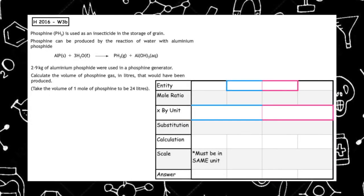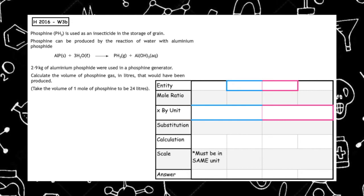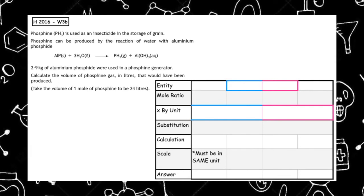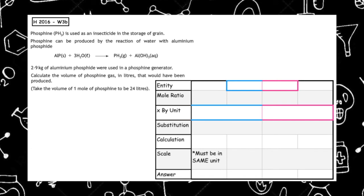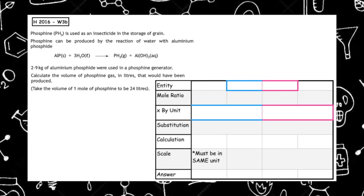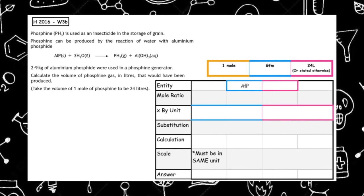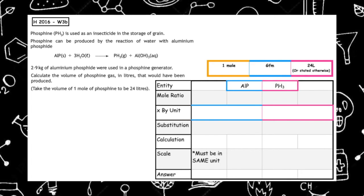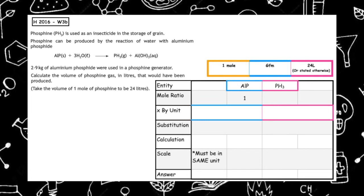This past paper question is from the Higher 2016, written 3b. Phosphine is used as an insecticide in the storage of grain. Phosphine can be produced by the reaction of water with aluminium phosphide. The balanced equation is given. 2.9 kilograms of aluminium phosphide were used in a phosphine generator. Calculate the volume of phosphine gas in litres that would have been produced, taking the volume of 1 mole of phosphine to be 24 litres. We take down the entities: aluminium phosphide (AlP) and phosphine gas (PH₃). The mole ratio is 1 to 1, as there's no number in front of either.